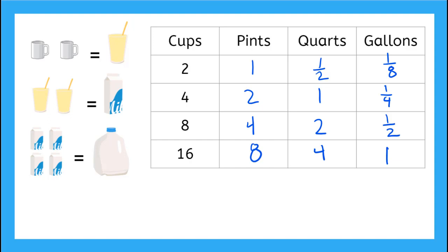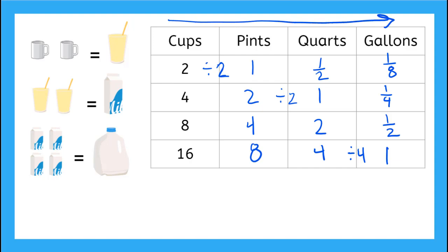In our last lesson, we filled out this chart for cups, pints, quarts, and gallons. We discovered when we're moving from cups to pints, we can divide by two to find how many pints. When we're moving from pints to quarts, we can also divide by two. And when we're moving from quarts to gallons, we divide by four. So that's us going from smaller to larger in our units.